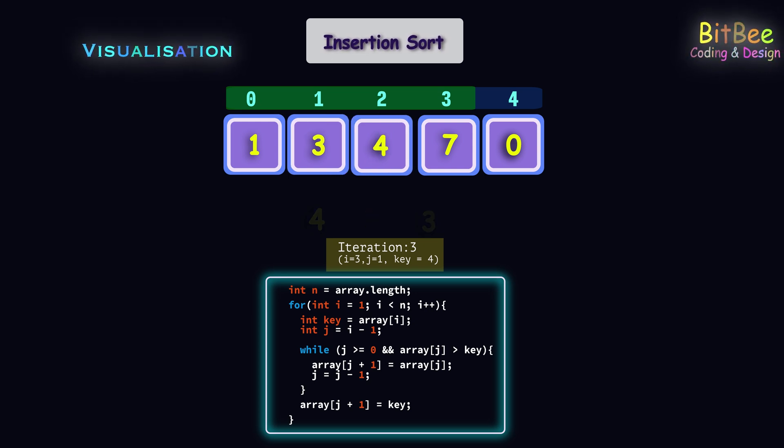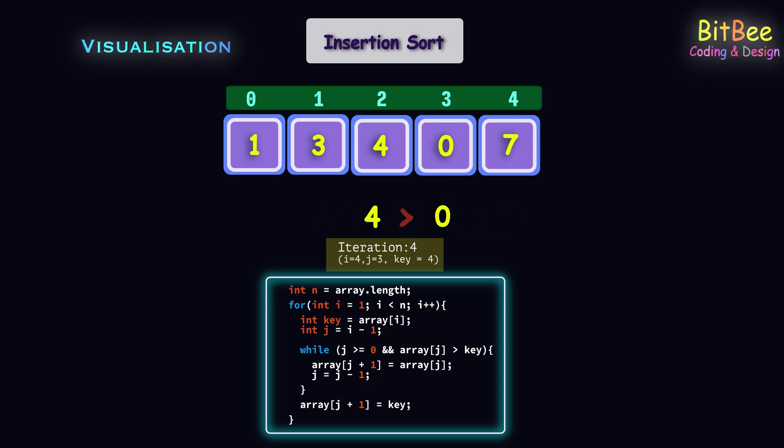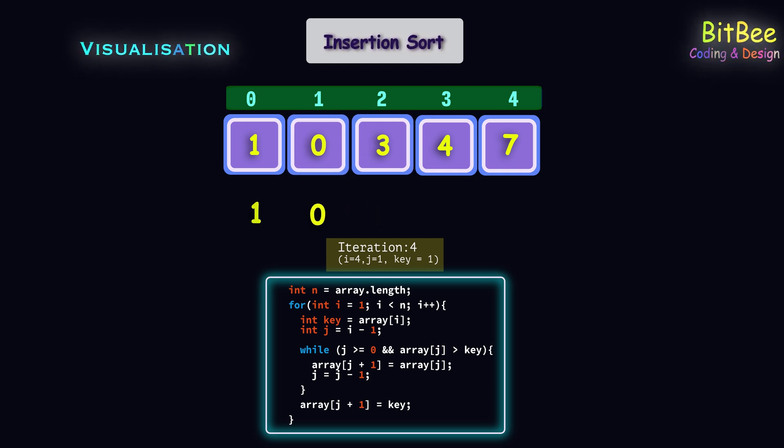In the same way, all the elements will get swapped from the last index to the 0th index in this iteration. Now all the iterations were completed and the array is sorted in ascending order.